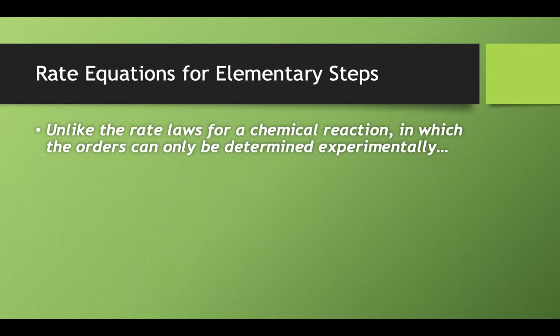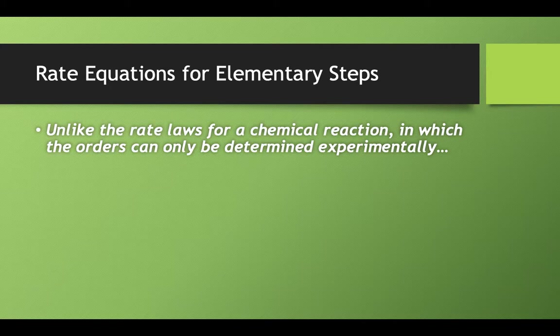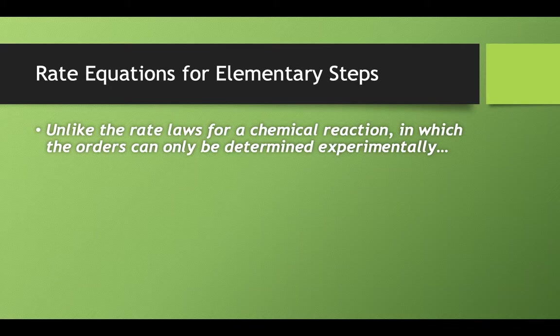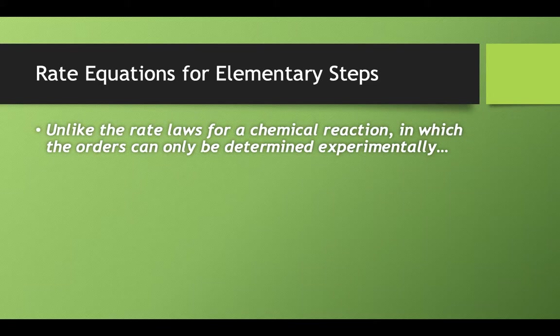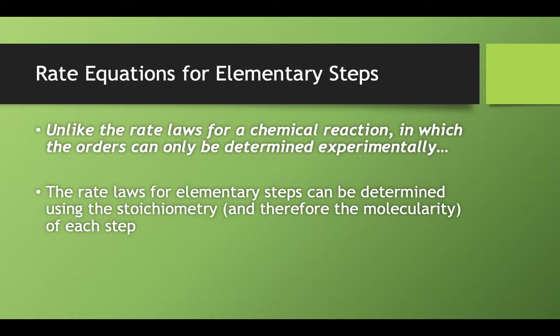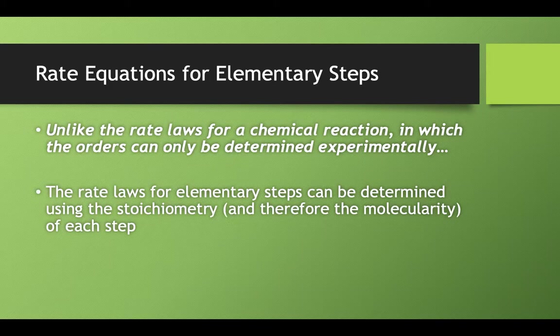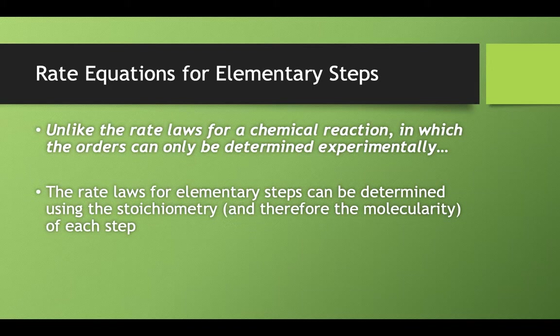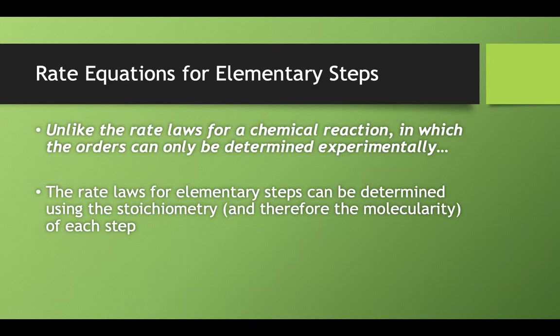Up until now, all the rate laws that we have been solving for, when we were looking for orders and rate law constants, we had to determine the order experimentally. There's no way that you could just look at a chemical reaction and figure out what the rate law is without doing an experiment. For elementary steps though, you can use your balanced chemical equation to figure out what the rate laws would be. It only works if you're looking at rate laws for elementary steps, not overall reactions.